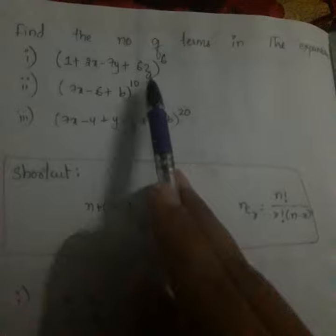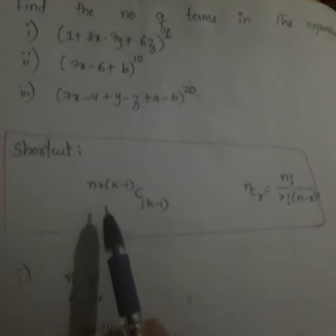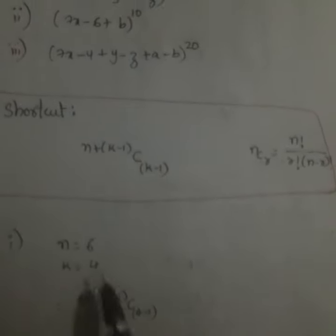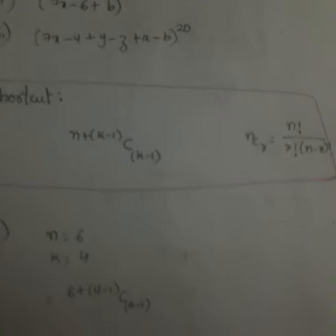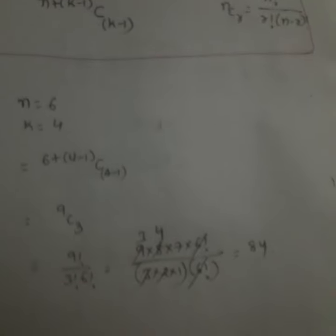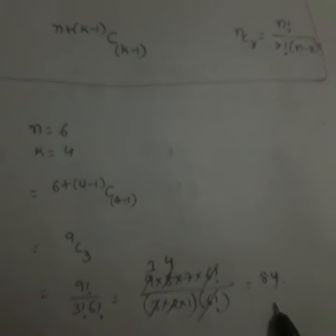Here we obtain n value as 6, k value as 4. My next task is to substitute n value and k value here. I got n value as 6, k value as 4. Once I substitute, I am getting the answer 84. 84 would be my answer. That's it.